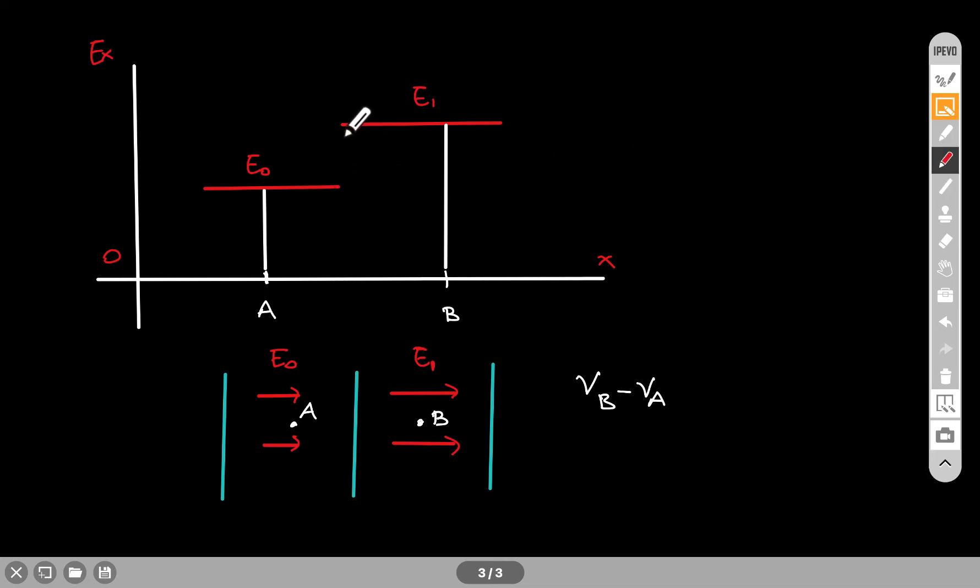this area. This is the area that you have to calculate to find VB minus VA.